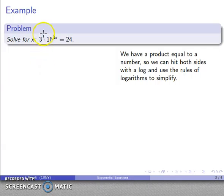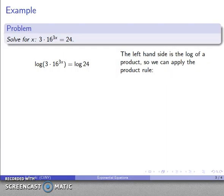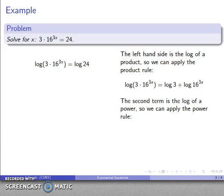For example, let's take the equation 3 times 16 raised to power 3x equals 24. A little analysis goes a long way. On the left hand side, I have 3 times 16 raised to power 3x. This is a product equal to number, so I can hit both sides with a log and use the rules of logs to simplify. I have the log of a product, so on the left hand side the log of a product is the sum of the logs.